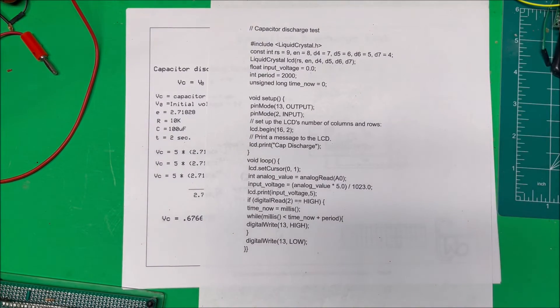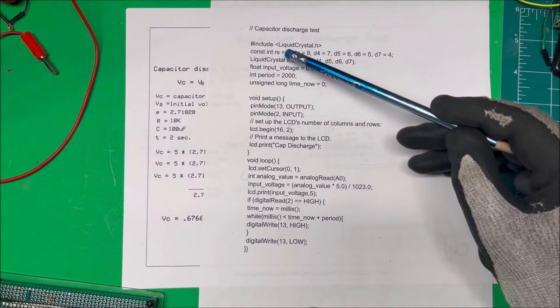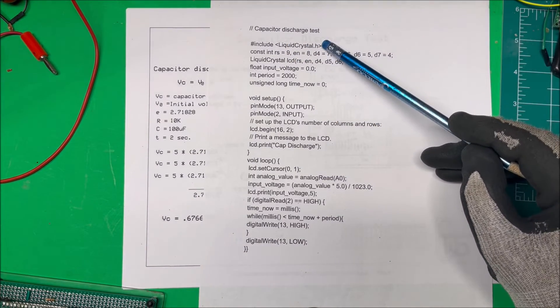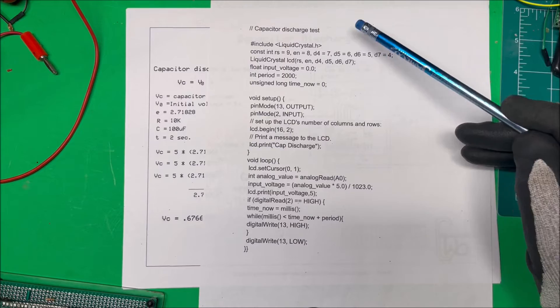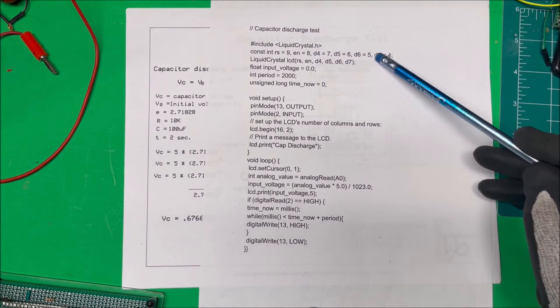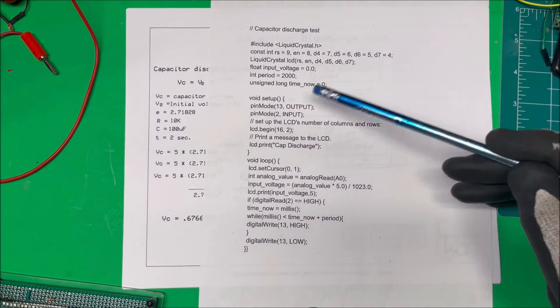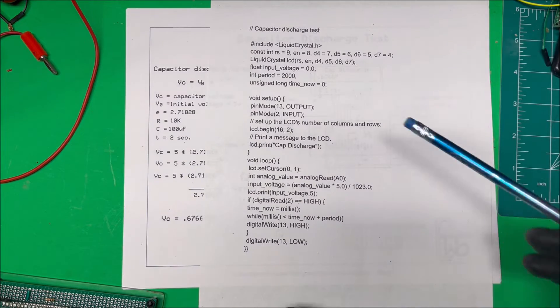Now here's the Arduino code here. We just have our liquid crystal display library, and then we put our pins in here. I changed the order of the pins just so that I wouldn't have to crisscross the wires.